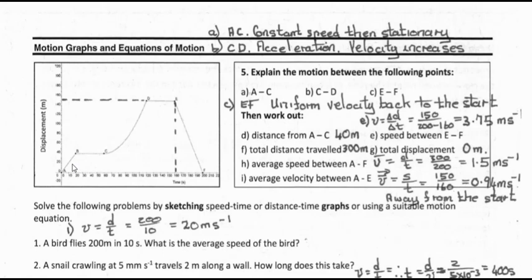If you compare this with A to B, the velocity is constant. When we're talking about displacement-time graphs, we need to realise that displacement is a vector, so it has a direction as well as a magnitude. This means the gradient is showing the velocity rather than the speed. Speed would be shown by the gradient in a distance-time graph, but here we're looking at velocity.